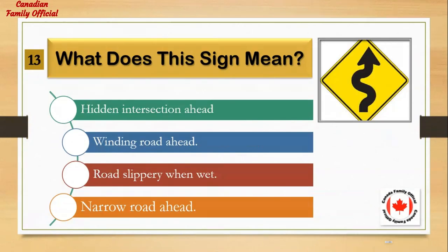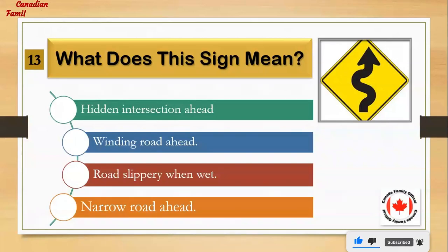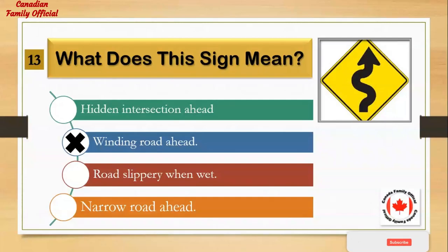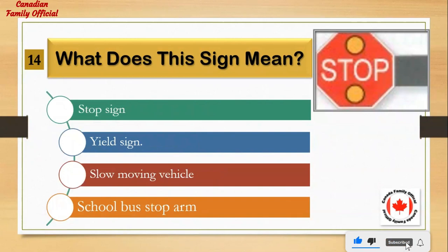What does this sign mean? Number 1: hidden intersection ahead. Number 2: winding road ahead. Number 3: road slippery when wet. Number 4: narrow road ahead. And the answer is: winding road ahead.